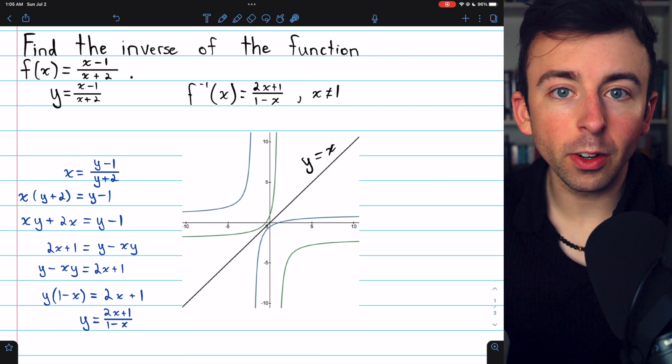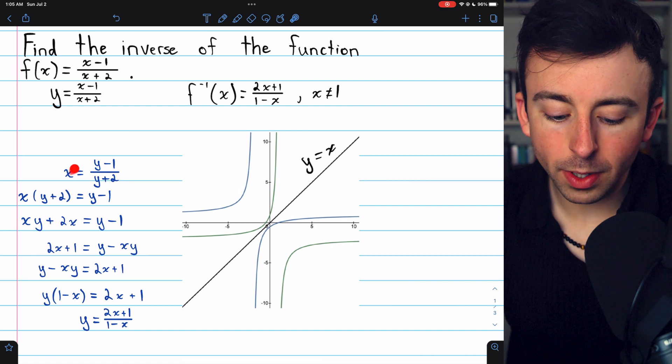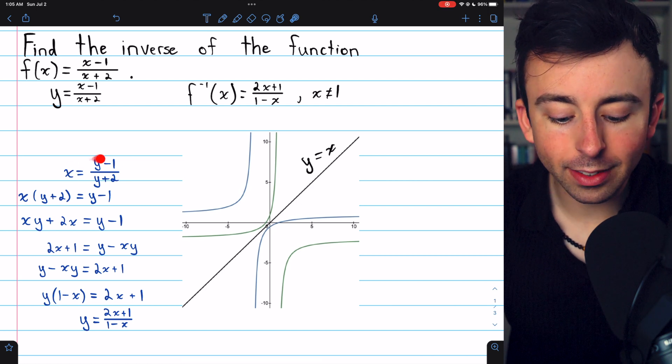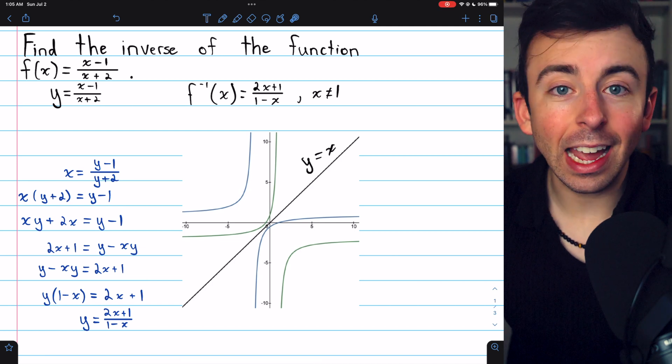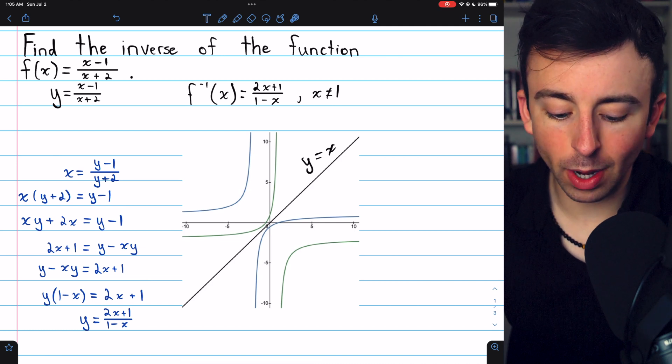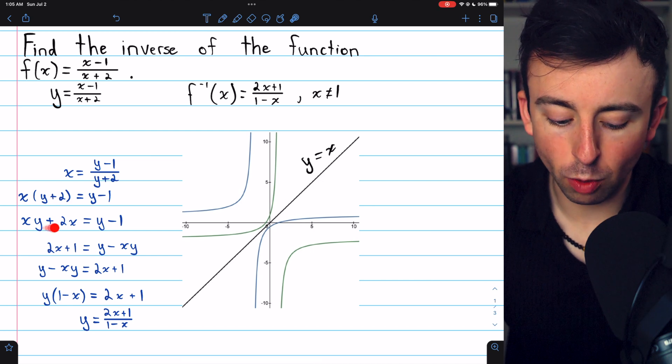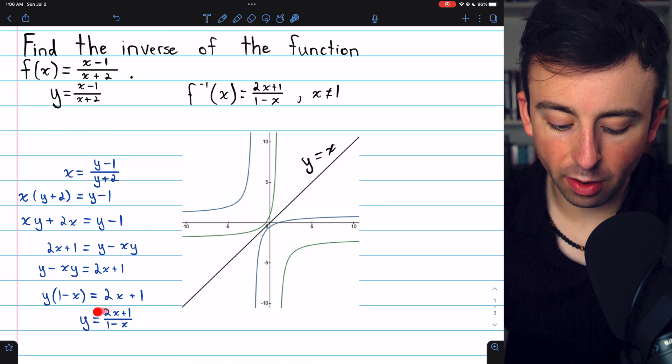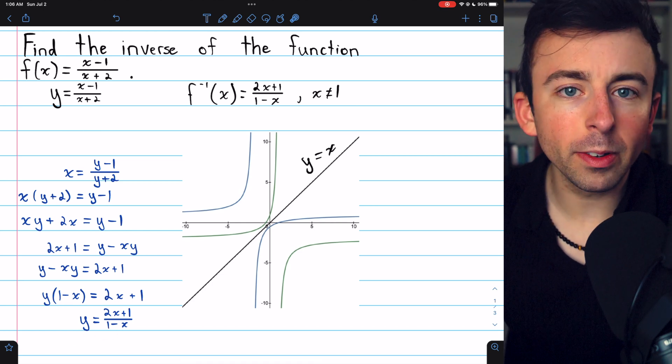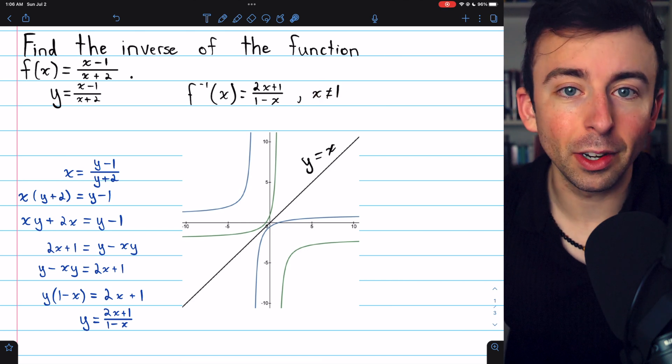Once more, to find the inverse function, all we did was replace f of x with y, then we swapped the x's and the y's, and then we just go through the process of solving for y. In the case of a rational function like this one, that required multiplying by the denominator, doing some distribution, then a little bit of factoring and finishing off with some division, which requires us also to specify where our inverse function is not defined.